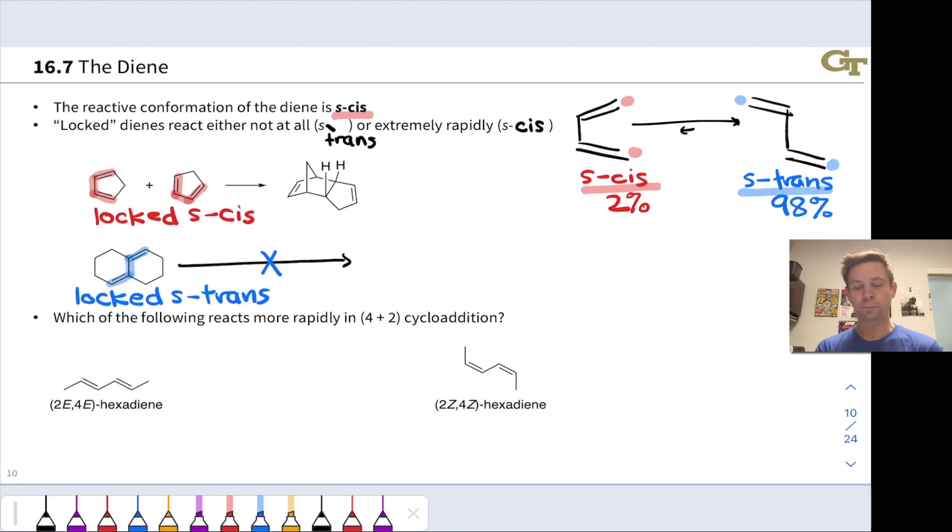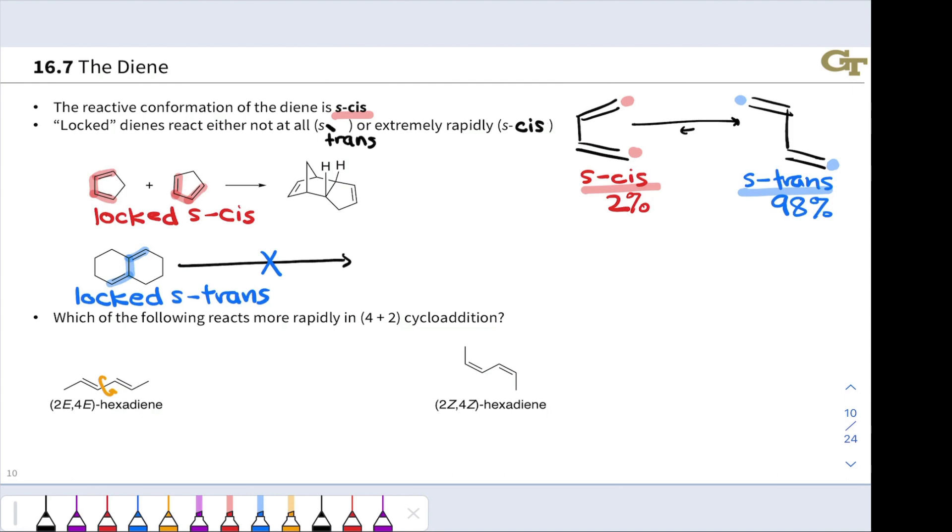And I think in order to appreciate this, which structure or which compound reacts more rapidly, let's draw each in its S-cis conformation, since this is the reactive conformation, and just kind of see what happens. To do that, we're going to need to rotate around that central single bond. Right now, we're looking at the S-trans conformation, right, with the double bonds on opposite sides of that single bond.